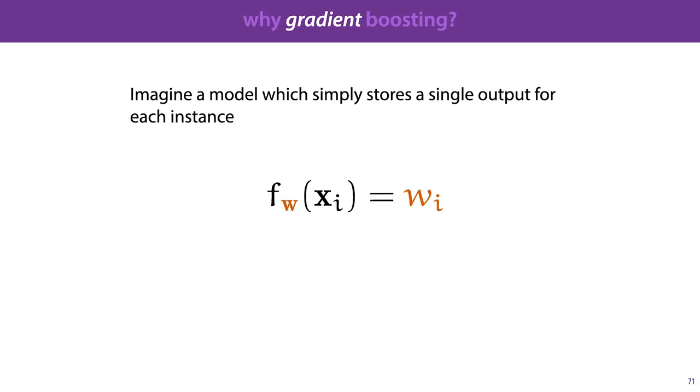To see why this is called gradient boosting, imagine a model which simply stores a value wi, which is the value it will predict for instance xi. This is a kind of perfectly overfitting model, which we cannot expect to learn anything. But what we can do is look at the negative gradient of its loss, and think of that as a kind of ideal direction for where we would want a more realistic model to go. If we could control all the outputs of our model for all of our instances individually, we would want to follow the negative gradient of the loss that this model gets.